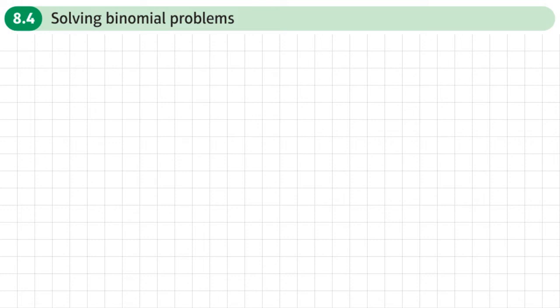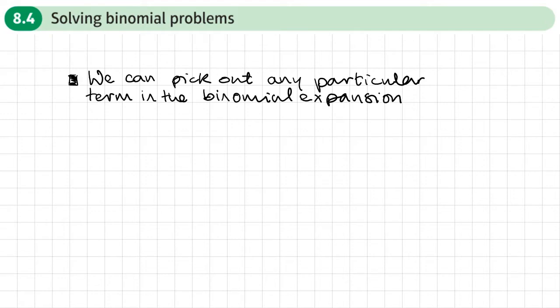This is the fourth section on chapter 8, the binomial expansion, and this section is about solving binomial problems. In binomial expansion problems, we're often directed to a particular term in the expansion, so it'd be useful for us to be able to pick out any term in the expansion. We can pick out any particular term in a binomial expansion.